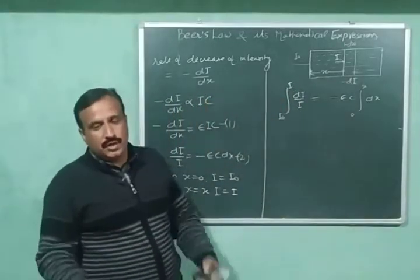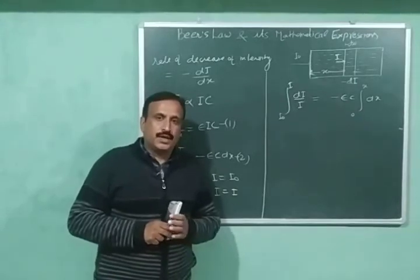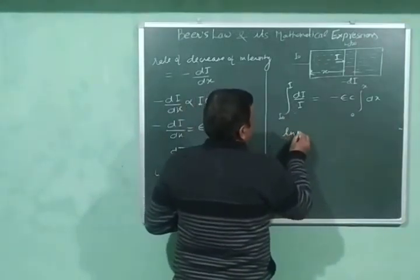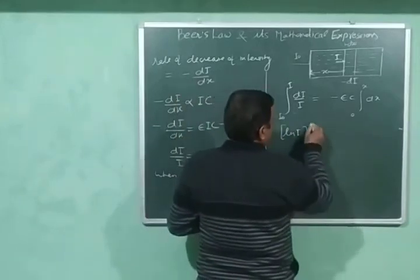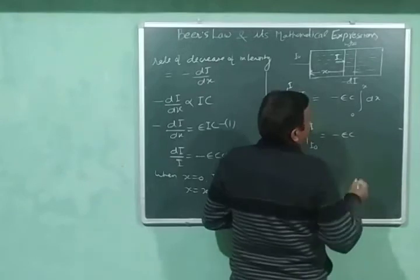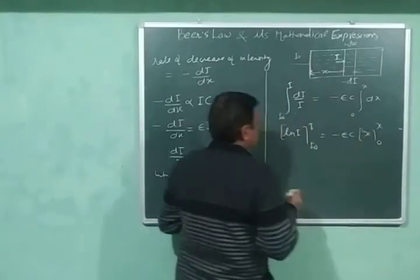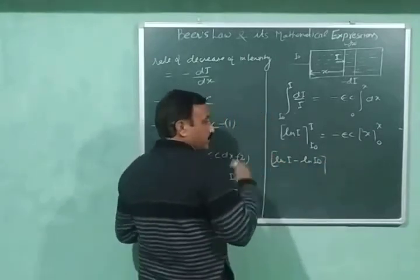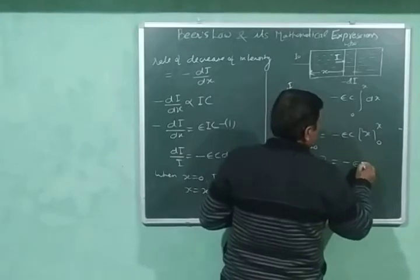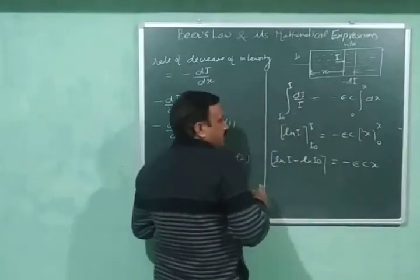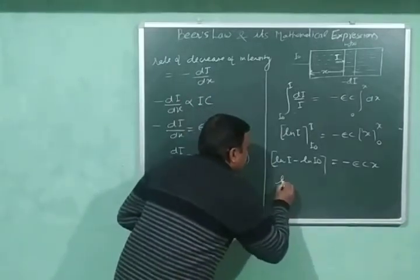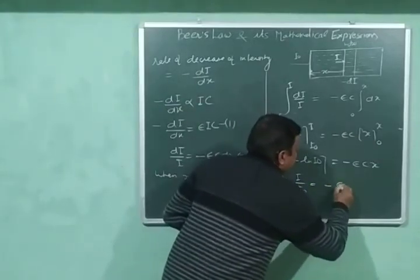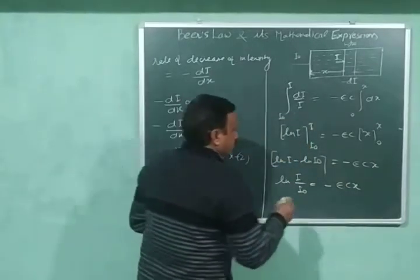ε and concentration C are kept outside the integration sign because both are constant. The integration of dI/I equals natural log of I, evaluated from I₀ to I, and integration of dx equals x, evaluated from 0 to x. This gives: ln(I) − ln(I₀) = −εC·x, which simplifies to ln(I/I₀) = −εCx. This is equation number 3.